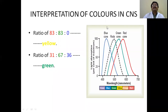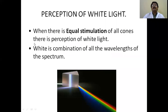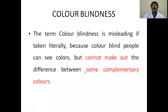A ratio of red 83, green 83, blue 0 gives a yellow sensation; a ratio of red 37, green 67, blue 36 gives a green sensation. The term 'color blindness' is misleading — color-blind people can see colors but cannot distinguish between certain complementary colors.